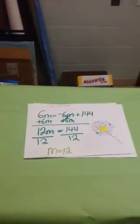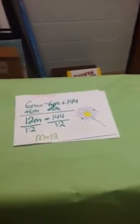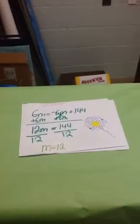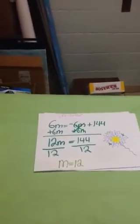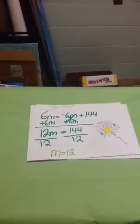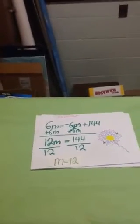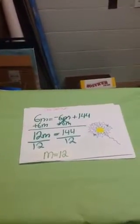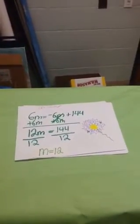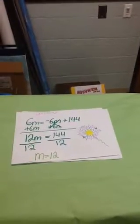Practice Problem: 6m equals negative 6m plus 144. First, you add 6m plus 6m to get 12m. After, you divide 144 by 12 and you get m equals 12.